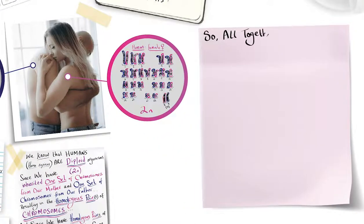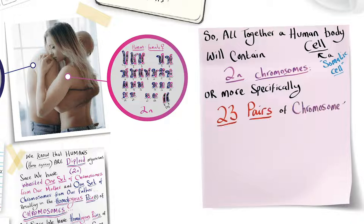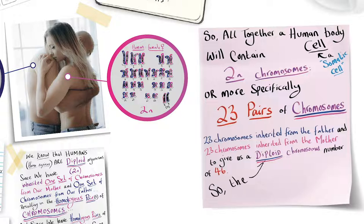So altogether a human body cell, a somatic cell, will contain 2n chromosomes or more specifically 23 pairs of chromosomes: 23 chromosomes inherited from the father and 23 inherited from the mother, to give us a diploid chromosomal number of 46. So the diploid number 2n of Homo sapiens is 46.